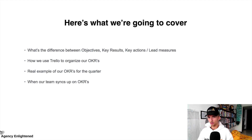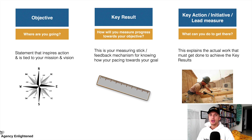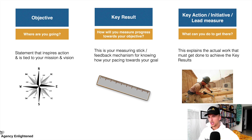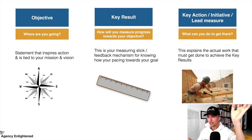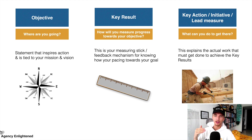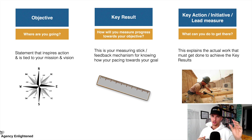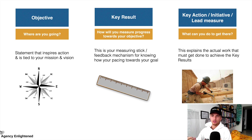When our team syncs up on OKRs, I'll explain how we communicate them. Here's the objective: where are you going? It's the statement that inspires action and is tied to your mission or vision. A key result is how you will actually measure progress towards your objective — it's your measuring stick, the feedback mechanism that tells you whether you're getting closer to achieving the objective. The key action — otherwise known as the initiative or lead measure — is basically what you can actually do to achieve those key results, and thus achieve the objective. The cadence is: objective, key results, key action.